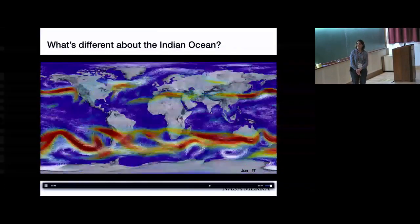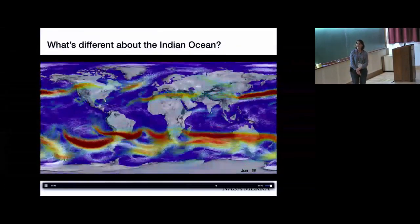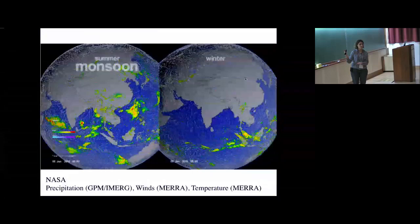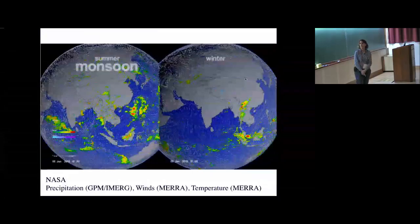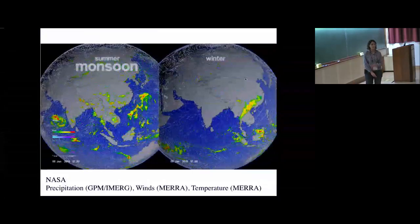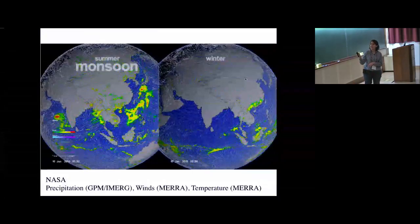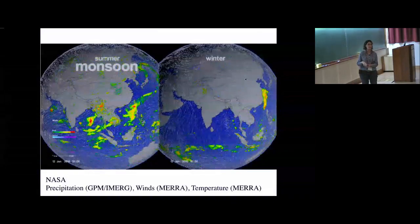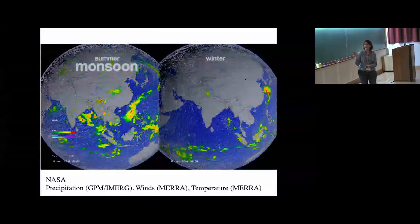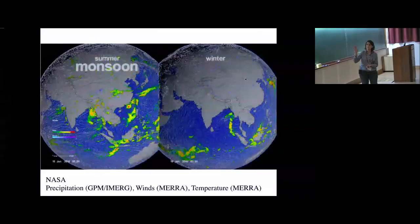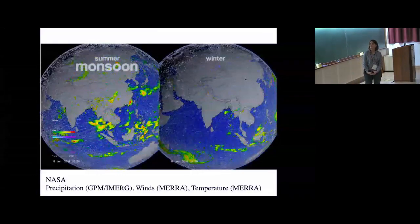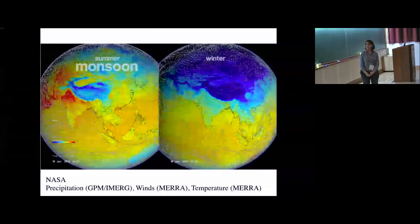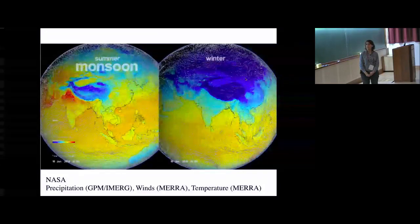Here's another simulation from NASA showing the summer monsoon on the left and the winter monsoon on the right. Surface winds are plotted from that same MERRA product. The color is precipitation, though it's about to switch to temperature. You can see the difference in surface temperature in the summer monsoon and in the winter monsoon.